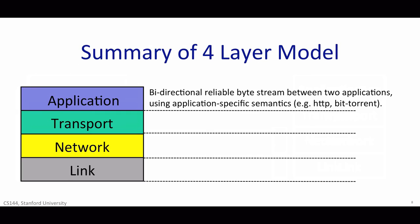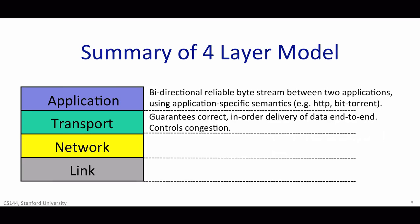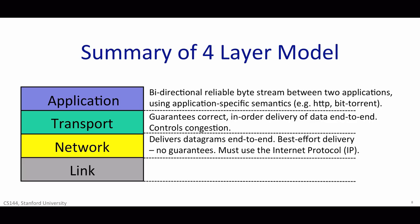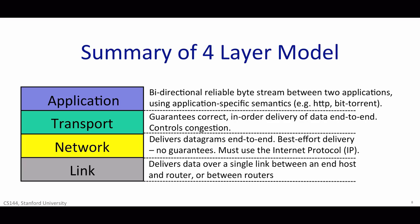So in summary: applications use a bi-directional reliable byte stream between applications, typically but not always, and they use application-specific semantics such as HTTP or BitTorrent. The transport layer typically guarantees correct in-order delivery of data end-to-end and controls congestion, although some applications don't need this and can use a different transport layer. The network layer delivers datagrams end-to-end, providing a best-effort delivery service with no guarantees — we must use the Internet Protocol. The link layer delivers data over a single link between an end-host and a router, or between two routers.